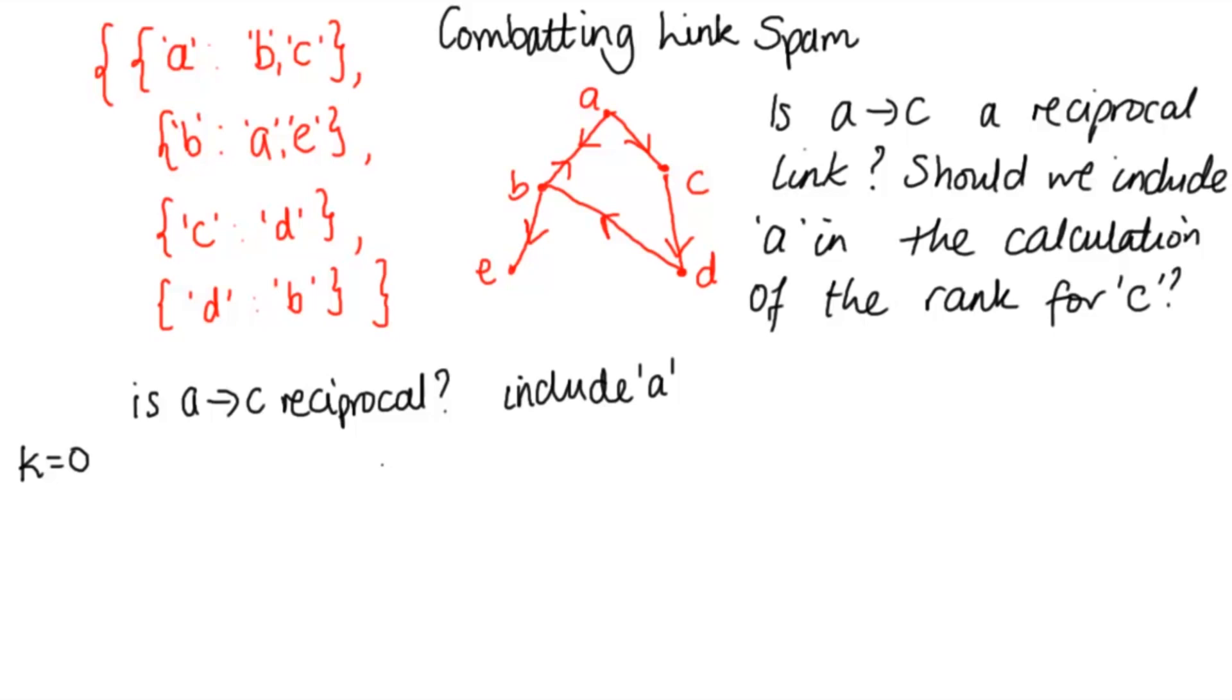So if K equals zero, this is the link we're looking at. If K equals zero the only links that are excluded are the self-links, links to the page itself. So AC is not reciprocal in this case and we should include A in C's calculation.